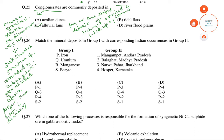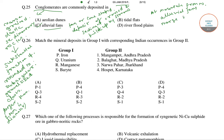These alluvial fans form at mountain fronts. The alluvial fans merge to form braid plains. Both these environments are associated with the thickest deposits of conglomerates. So the answer to this question is alluvial fans.